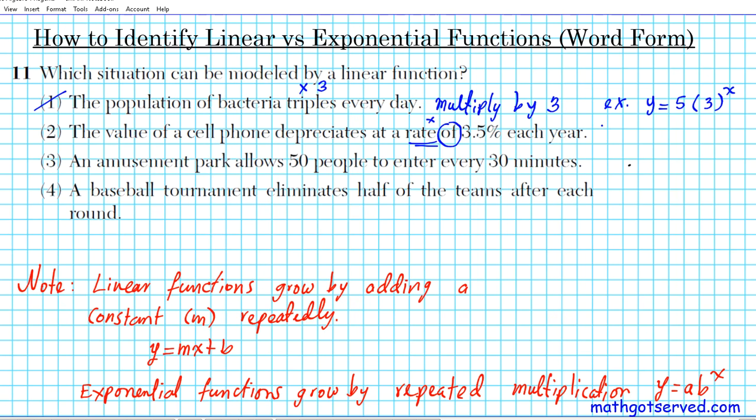So depreciating by a rate of 3.5% basically means that you multiply by 1 minus—1 represents 100%. 3.5% in decimal form is 0.035. So you multiply by 1 minus 0.035 repeatedly over and over again. And that's what will generate the terms of this depreciating function.